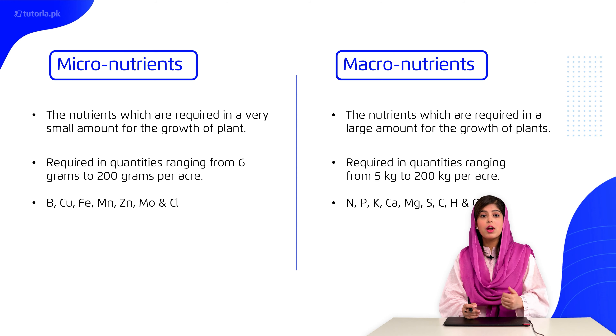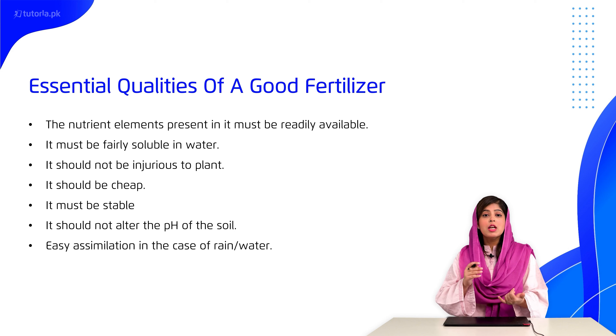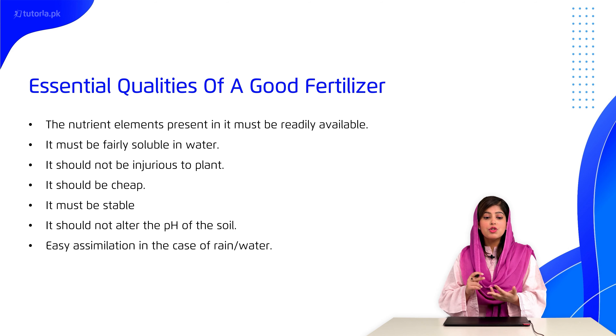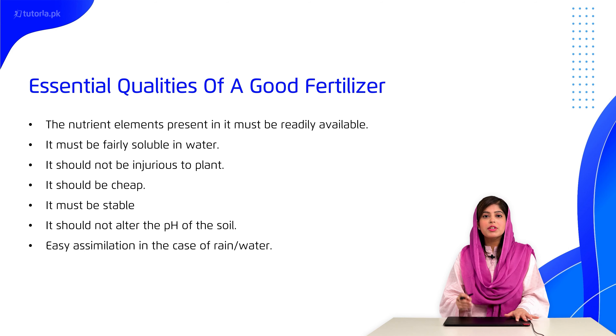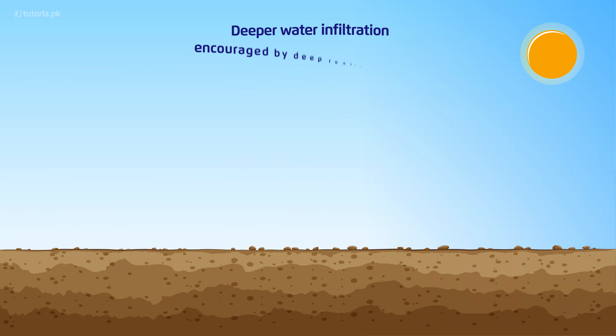The macro-nutrients which we will study — and whose fertilizers we will discuss — are nitrogen, phosphorus, and potassium. The qualities of a good fertilizer are: it should be soluble, easy to assimilate by plants, not injurious to plants, cheap, stable, and it must not alter the pH of the soil. You can see how roots efficiently assimilate nutrients in the form of nitrogen, phosphorus, and potassium.